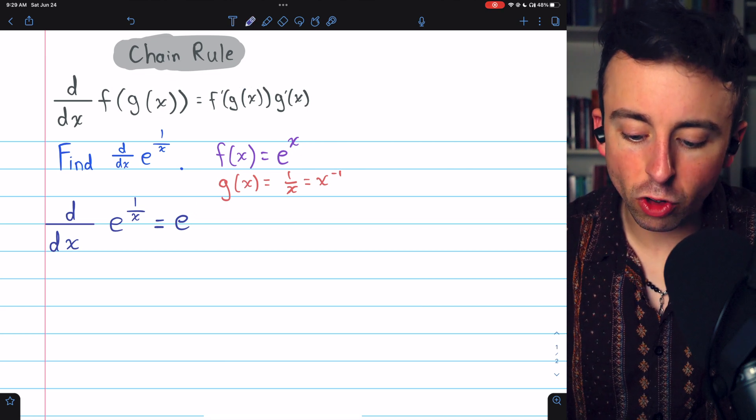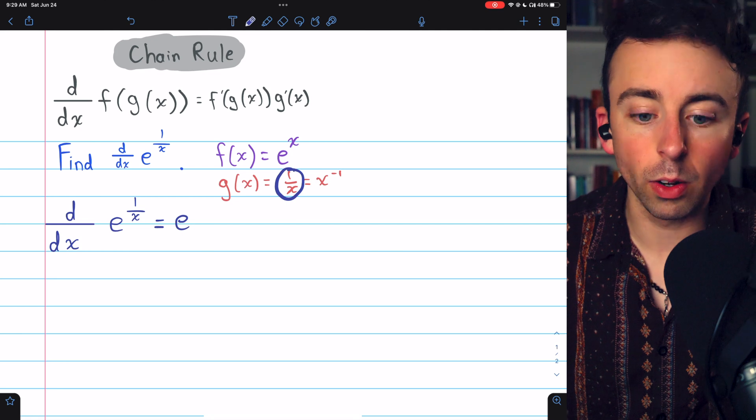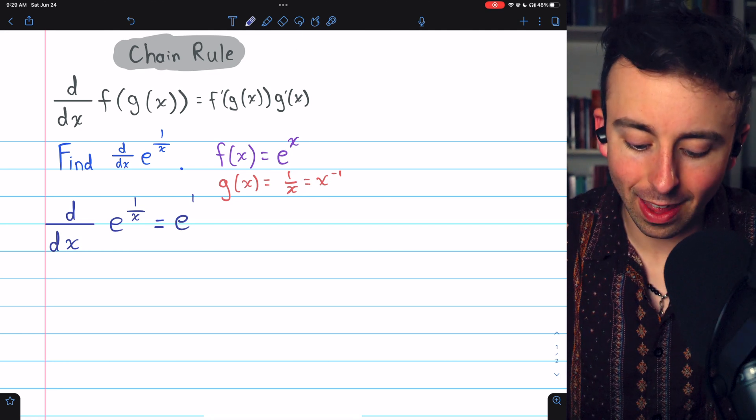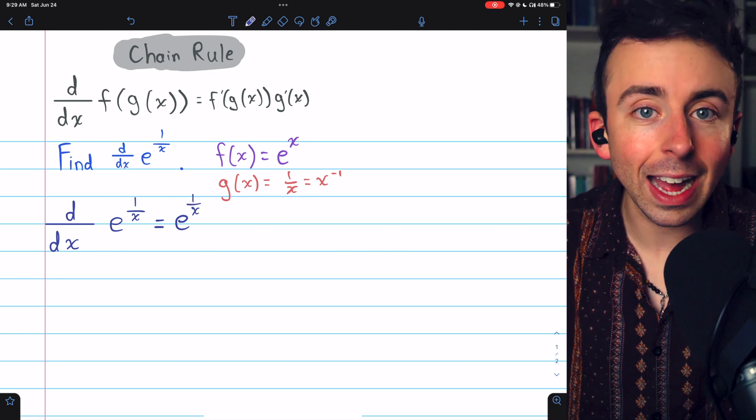Like we said g of x is the inside function. It's 1 over x. So we'll just put that there e to the 1 over x.